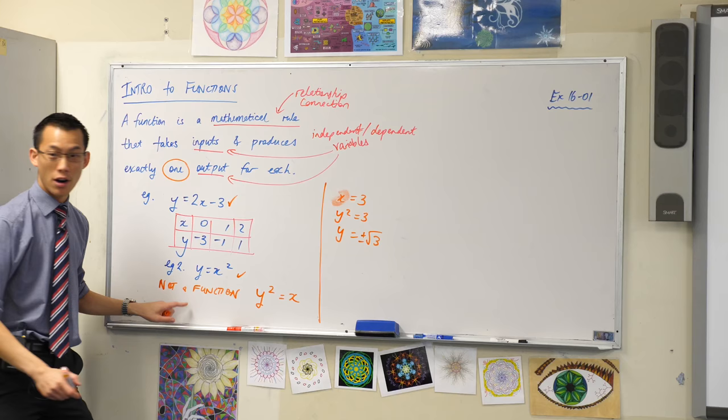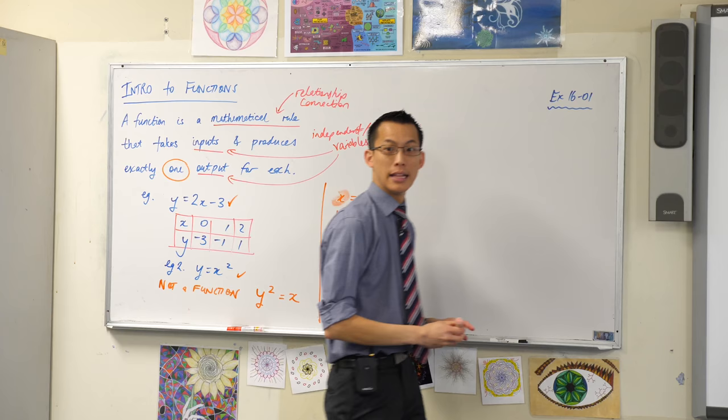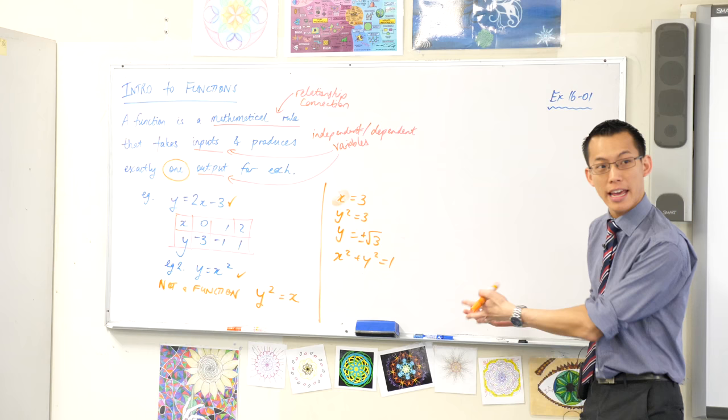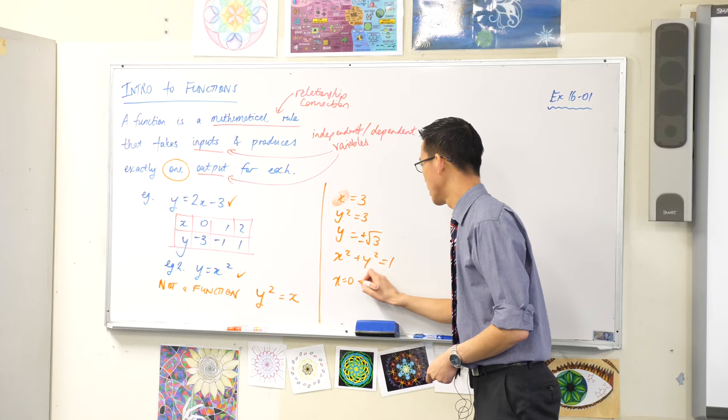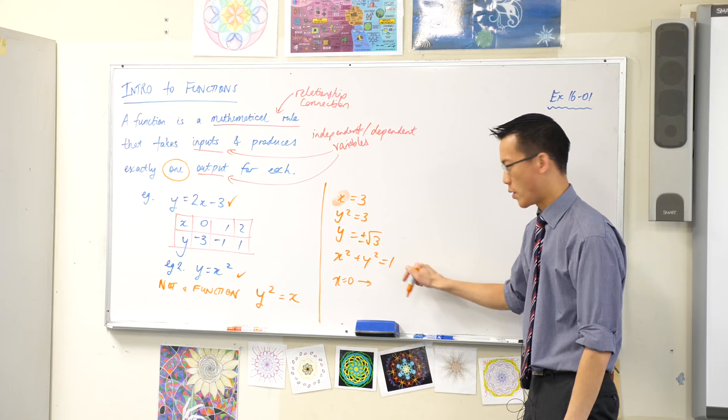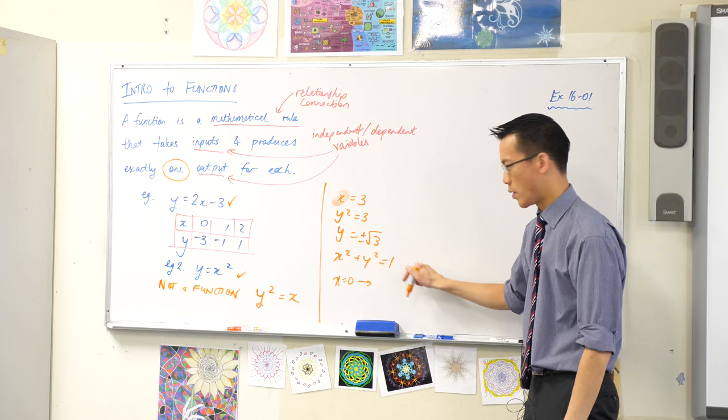Here's another example of a not function. X squared plus Y squared equals one. What's this shape? Do you recognize it yet? This is a circle. Can you see why it's not a function? Because if I put in an X value, let's try X equals zero. Then what happens when I try and find out the output? Well I'll get zero plus Y squared, which is just Y squared equals one. And again I'm like, oh I have lots of outputs, I've got two. That's not very useful.